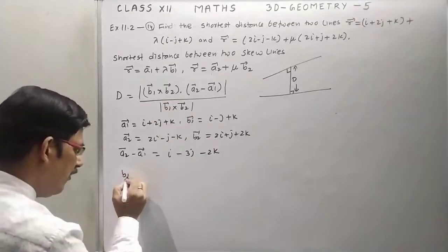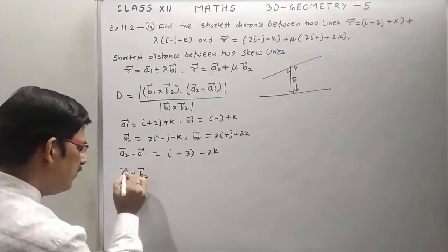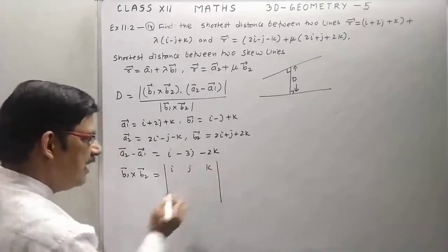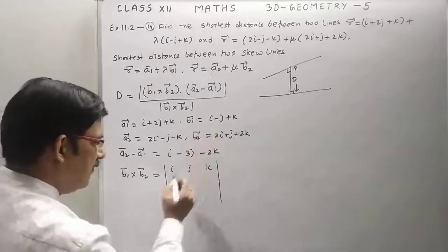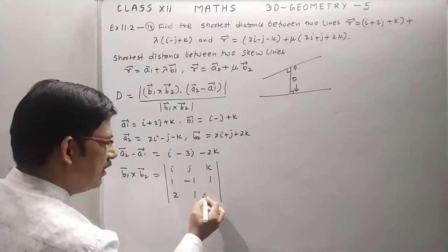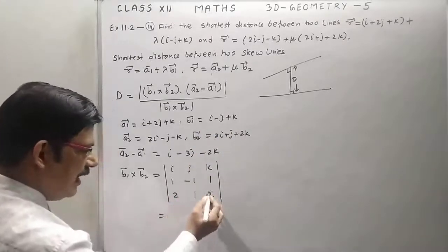Now we have to use b1 cross b2, so we will find b1 cross b2 and we will solve this by determinant method. Components of b1, that is 1, minus 1, 1, and this component of b2, 2, 1, 2.